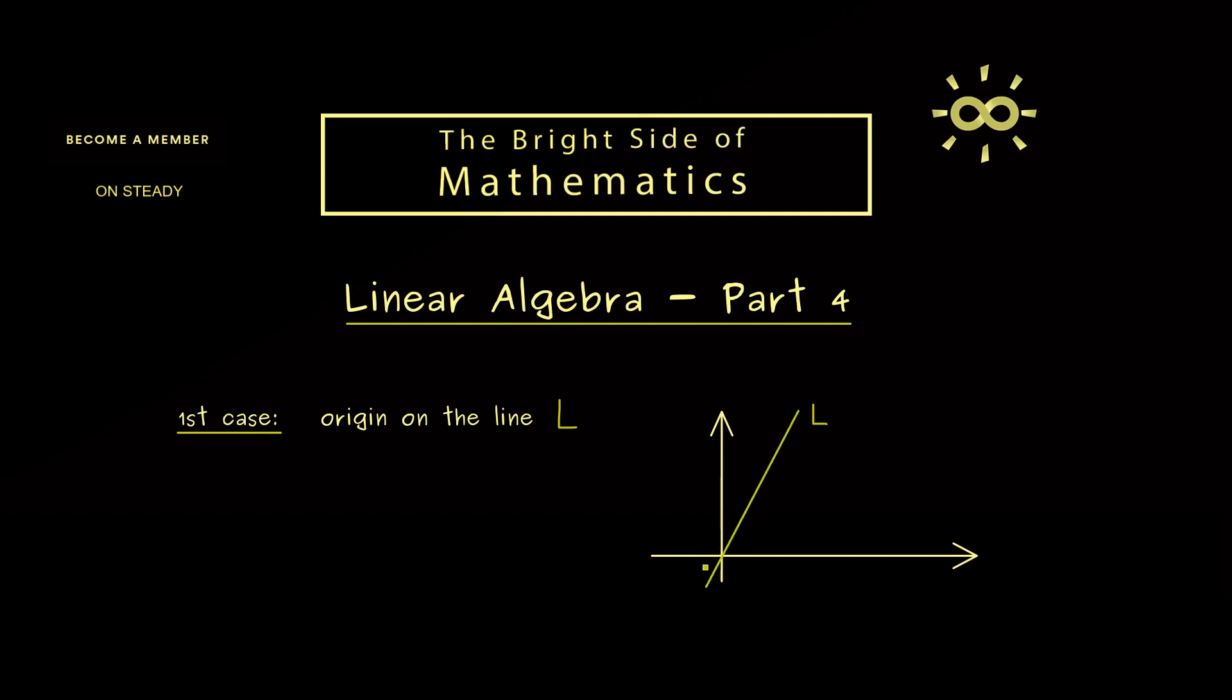So the line just gives one direction in our space and therefore it can be described with one vector. For example, we take this vector here and call it A. And as always, this means we have 2 components A1 and A2. So you see the only important thing here is that A is not the 0 vector.